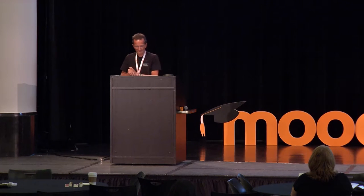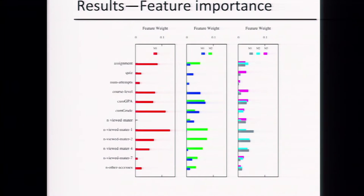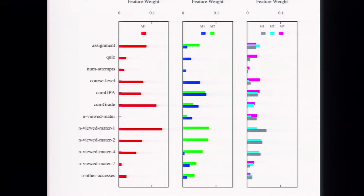It's interesting that the assignment-type feature has a big weight — whether the graded activity is an assignment or not impacts performance. When we look at the two-regression model, the two models have different characteristics. The blue group has high weight on cumulative grade and cumulative GPA, with very low weight on anything related to Moodle activities. The green model is well-suited for predicting students who do take Moodle activity into account.